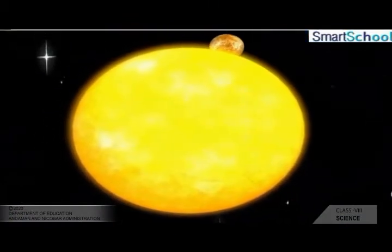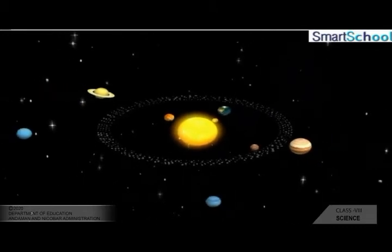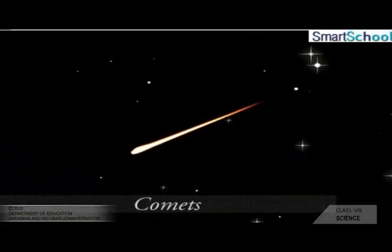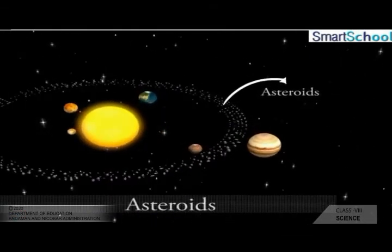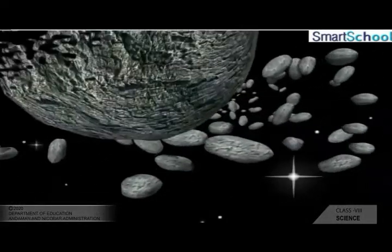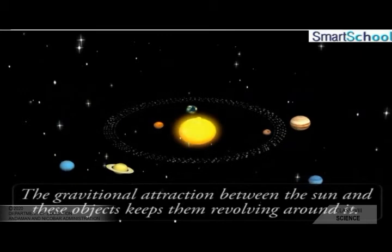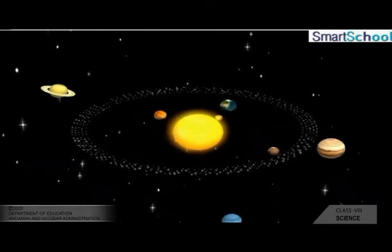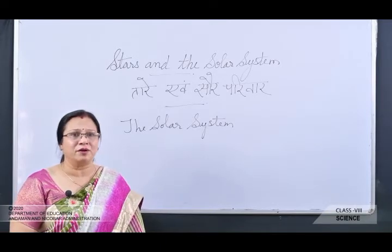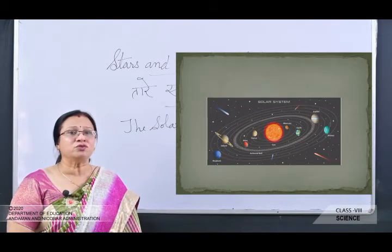The solar system consists of the sun and the heavenly bodies which revolve around it. This system contains many objects such as planets, comets, asteroids, and meteors. The sun is at the center of the solar system and all members revolve around the sun due to gravitational attraction. The sun and the celestial bodies which revolve around the sun form the solar system. It consists of large numbers of bodies such as planets, comets, asteroids and meteors. This picture shows the solar system.